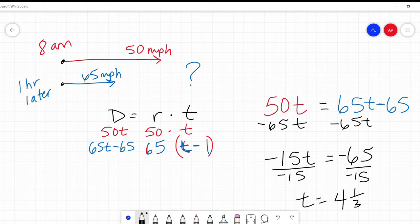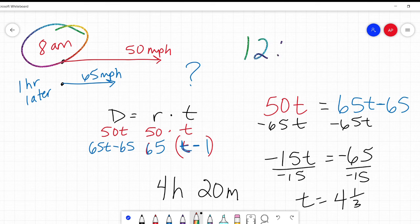If I'm talking about time, one-third of an hour, so it's four hours and 20 minutes. If they leave at 8 a.m., four hours and 20 minutes, they're going to meet at 12:20 p.m.